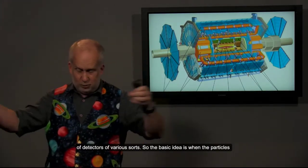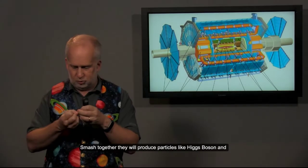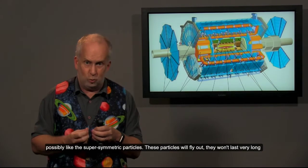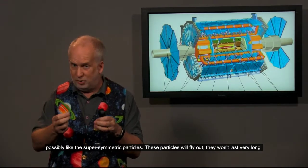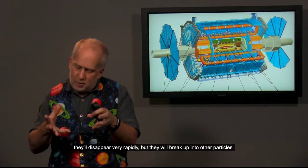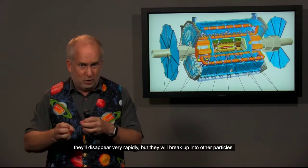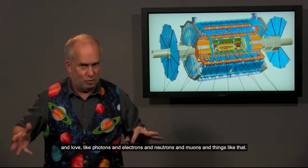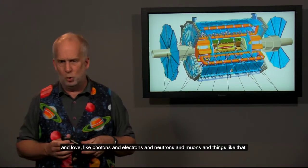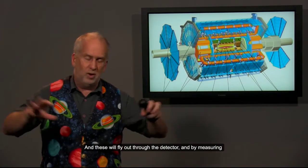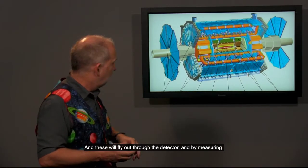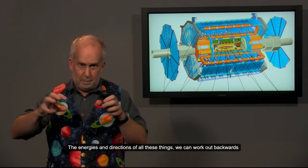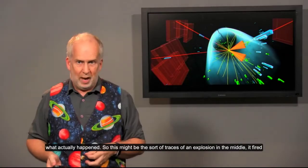So, the basic idea is when the particles smash together, they will produce particles like Higgs Boson and possibly the supersymmetric particles. These particles will fly out. They won't last very long. They'll disappear very rapidly, but they will break up into other particles, which in turn break up into yet more particles, and they end up with particles we kind of know and love, like photons and electrons and neutrons and muons and things like that. And these will fly out through the detector, and by measuring the energies and directions of all these things, we can work out backwards what actually has happened.